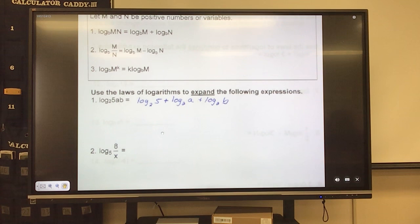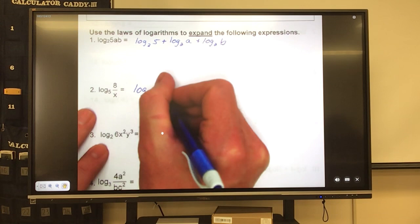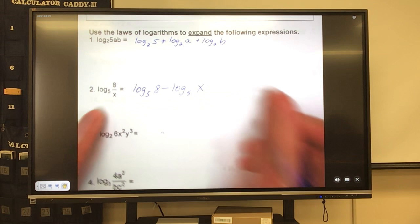All right, next one. The next one is a fraction. So we said fractions, what undoes a fraction? Subtraction. So we have log base 5 of 8, minus log base 5 of x. Too easy.